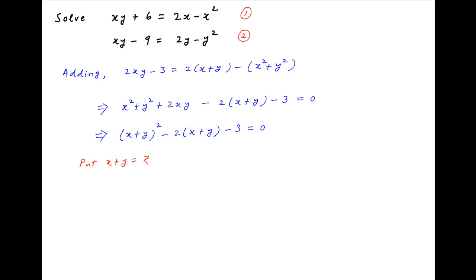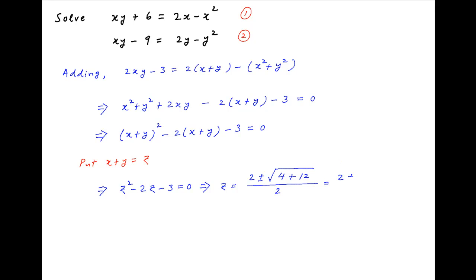Now put x plus y equal to z. Therefore this becomes z squared minus 2z minus 3 equals 0. Solving this quadratic equation in z, we get (2 plus or minus the square root of 4 plus 12) divided by 2, which simplifies to (2 plus or minus 4) upon 2. Therefore the possible solutions of z are 3 and minus 1.